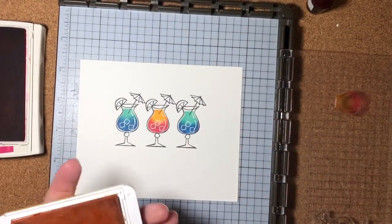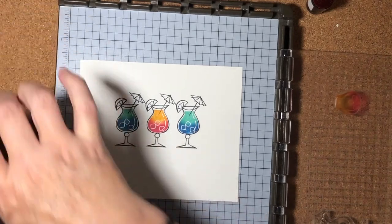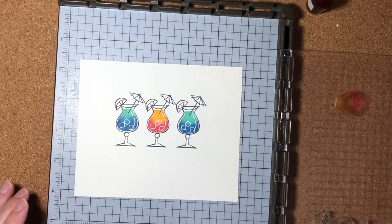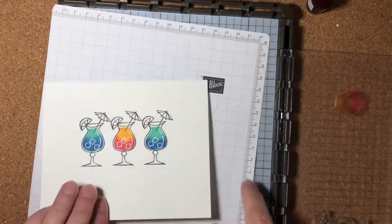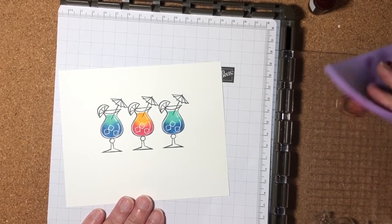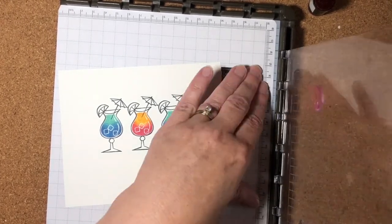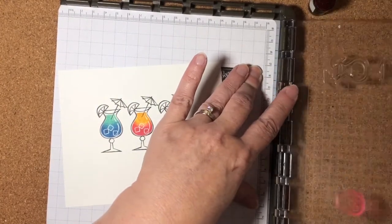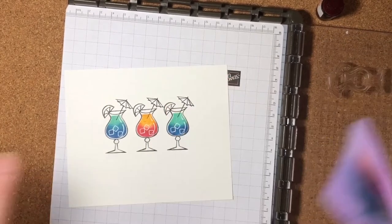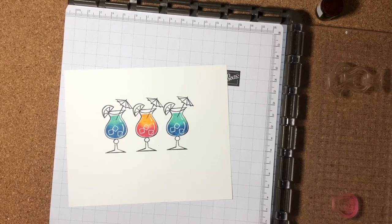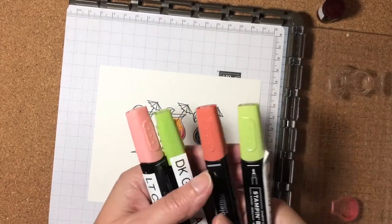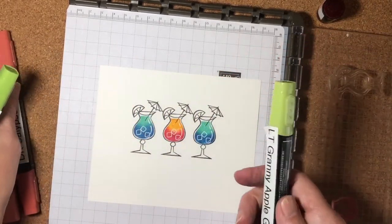I'm going to close up these ink pads. And I'm going to bring in a piece of scratch paper. Oh, you know what? I'm going to go ahead and clean this stamp. Now what I want to do is I want to add a little bit more color to these images, so I'm going to use my Stampin' Blends. So I've got my Dark and Light Calypso Coral and my Dark and Light Granny Apple Green.